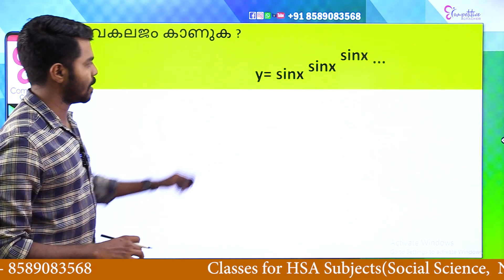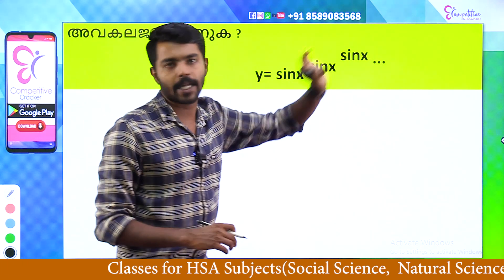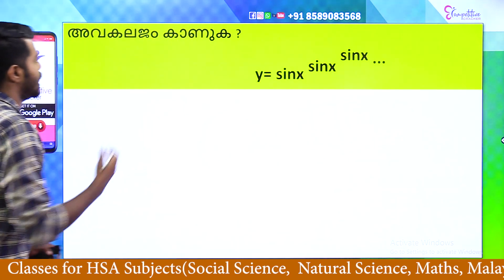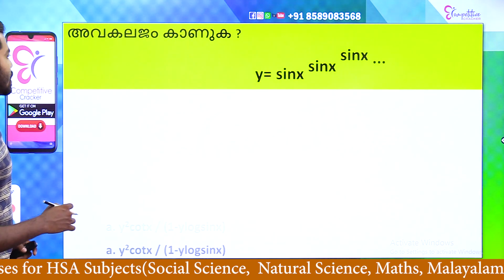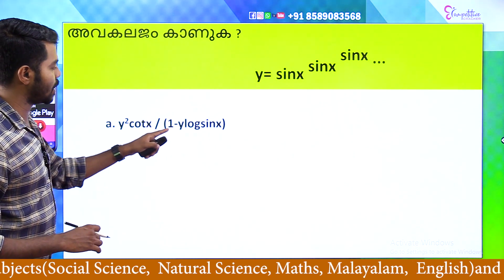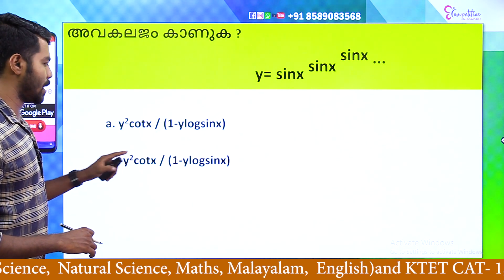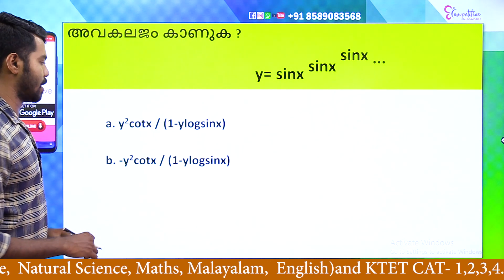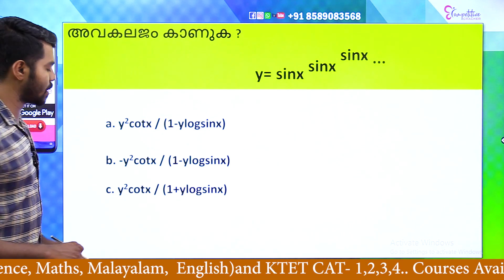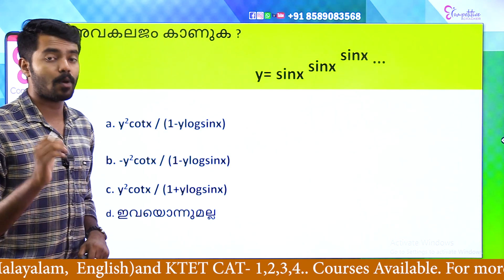Let us learn the next trick. y = sinx^sinx^sinx... and so on — that is, the power of the function repeating. The information is given. The options are: Option A — y²·cotx divided by (1 − sinx); Option B — minus y²·cotx divided by (1 − sinx); Option C — y²·cotx divided by (1 + y·loge sinx). What is the answer?